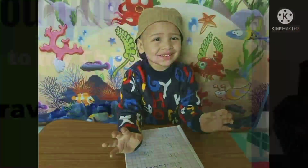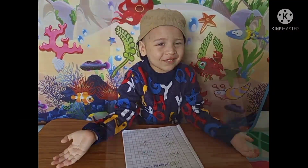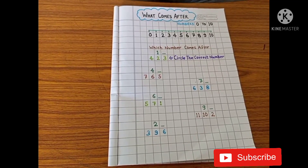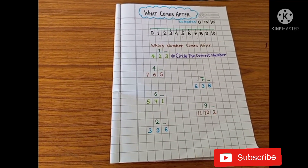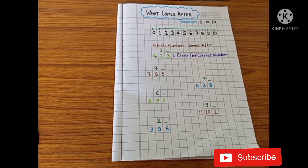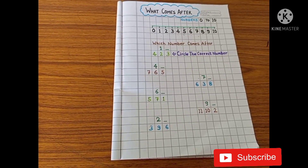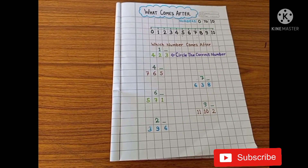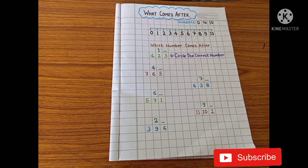Hi Dad! Welcome back to my dad. Aho, Bacho! Aaj hum Araf ke saas numbers revise karengi. What comes after ki activity ko karke? From 0 to 10. All are ready? Yeah, Mama! Okay, let's start.